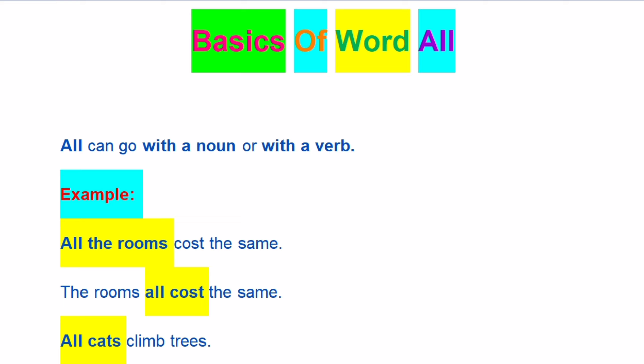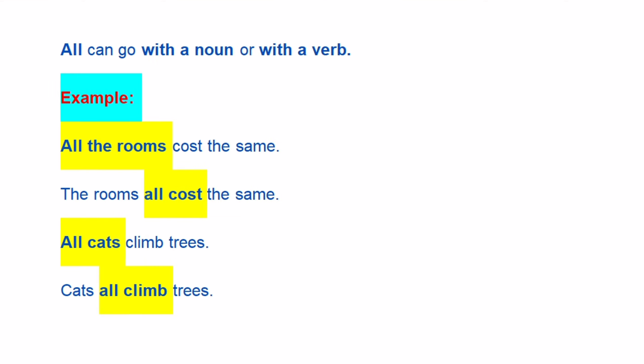All can go with a noun or with a verb. For example: 'All the rooms cost the same' or 'The rooms all cost the same.' 'All cats climb trees' or 'Cats all climb trees.'